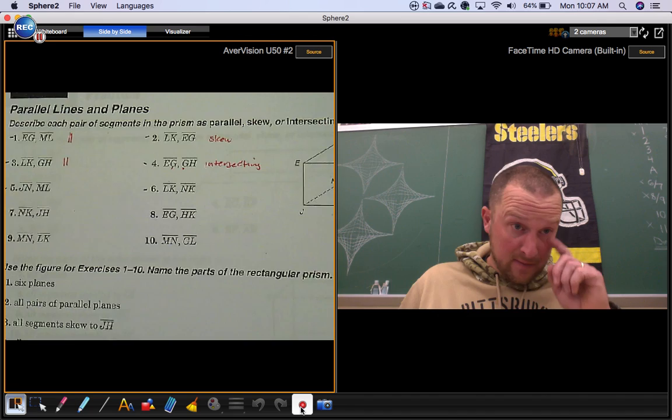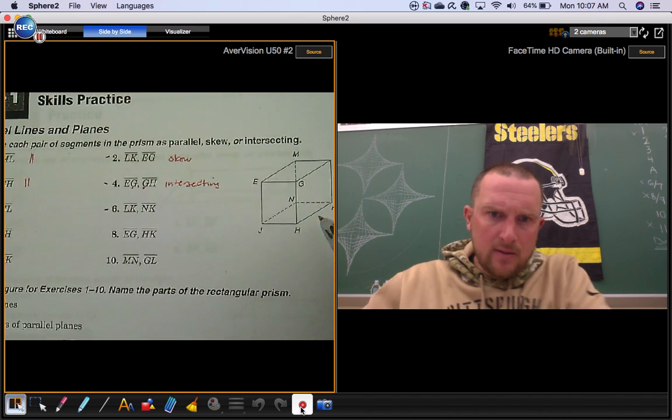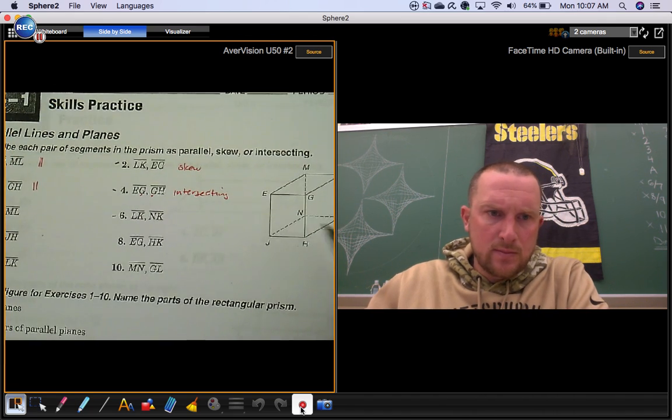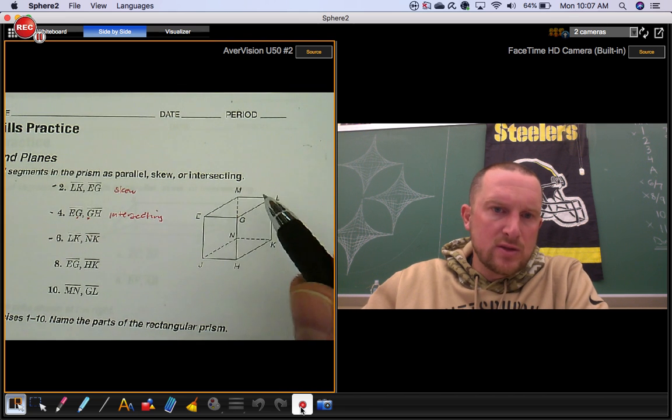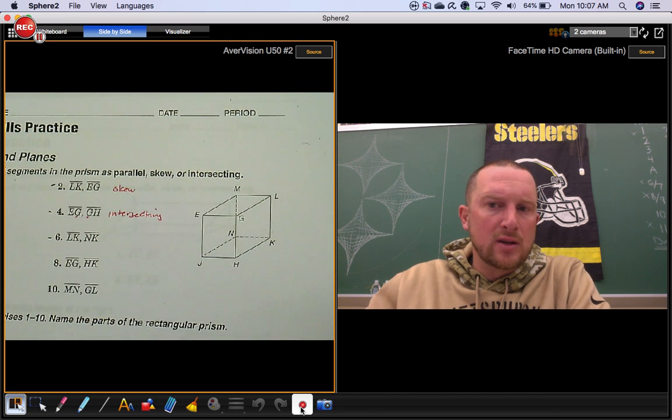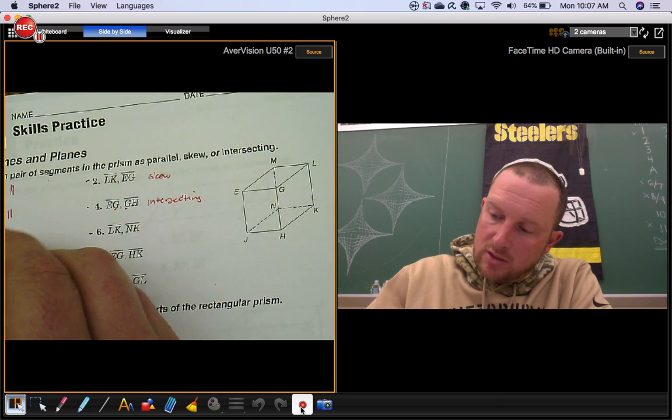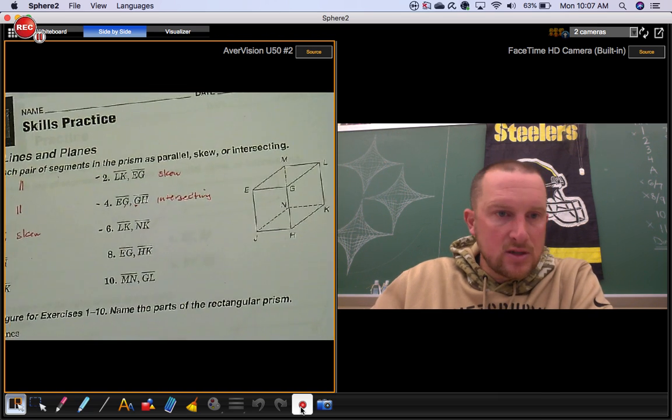Number five, segment JN, that's this one, and segment ML. That's this one. These are in two completely different planes. They're going in different directions. They don't touch. That's skew segments.